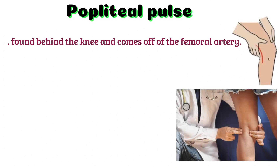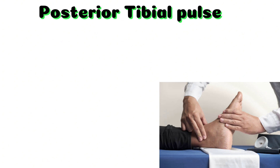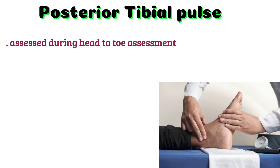Popliteal pulse: this artery is found behind the knee and comes off of the femoral artery. It is a rather deep artery, like the femoral, and is difficult to palpate. While palpating, flex the patient's knee at an angle of 120 degrees and push the fingers of both hands into the popliteal fossa, keeping your thumbs on the patella.